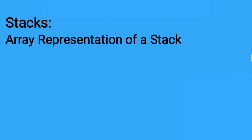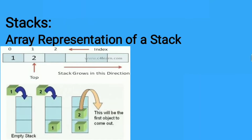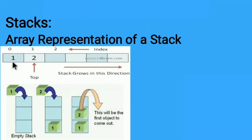Let us continue with the first one — array representation of a stack, which is a static or fixed structure. Here in the diagram we have an array consisting of a number of elements, with subscripts starting from 0, 1, 2, 3, and so on. There is one pointer called top. Top is initially pointing to null, and once incremented it points to the zeroth location, then the first, second index, and so on.